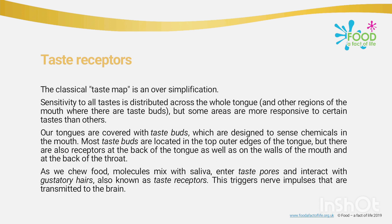When food is placed in the mouth, the surface of the tongue and other sensitive skin react to its surface texture. This sensation is known as mouthfeel. The classical taste map is an oversimplification — sensitivity to all tastes is distributed across the whole tongue and other regions of the mouth where there are taste buds, but some areas are more responsive to certain tastes than others.